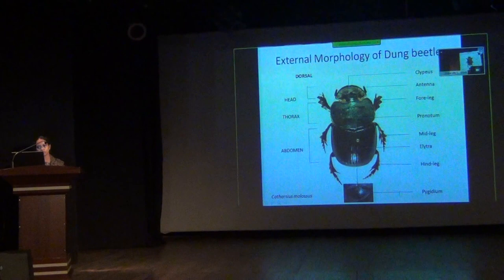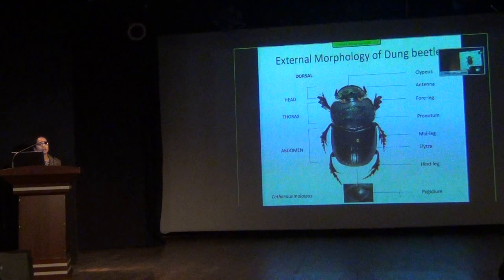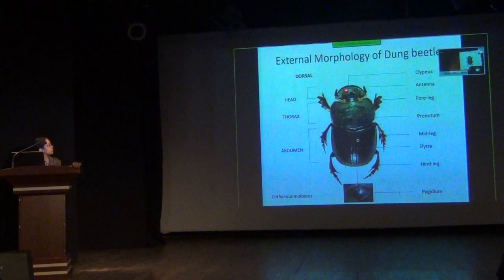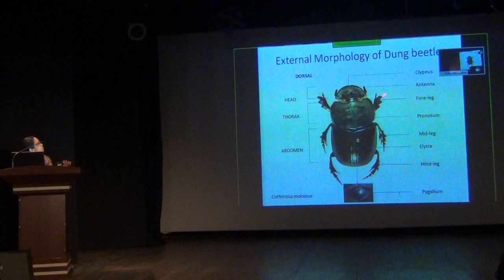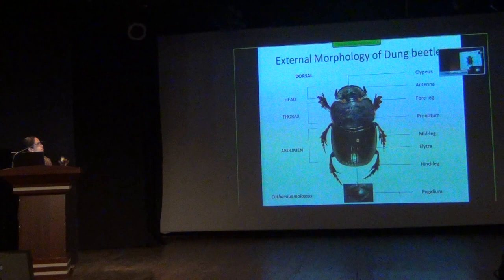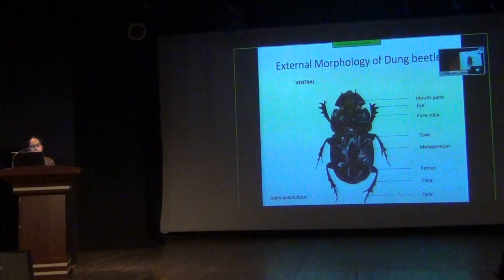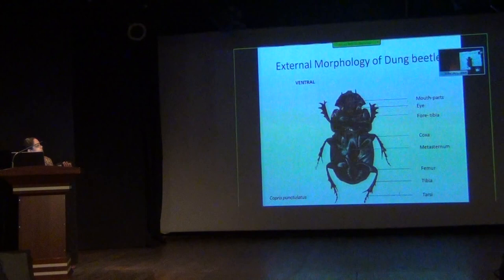Coming to the external morphology of dung beetles — as mentioned, it is very difficult to identify them in the field. The key characters you need to know are: the clypeus, the corallum, the pronotum, the elytra, the elytral striae, and the pygidium. Most identification keys refer to different sculptures, as different species have different sculptures. You also need to examine ventral characters such as the metasternum and spines visible on the legs of different species.